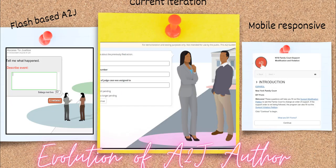The first version of A2J Author was released in 2005 as a flash-based application. It underwent a major facelift and technology overhaul about a decade ago. A2J Author has evolved into a user-friendly, accessible, mobile-responsive, web-based tool that allows lawyers, law students, and other legal professionals to build out incredibly complex expert systems.